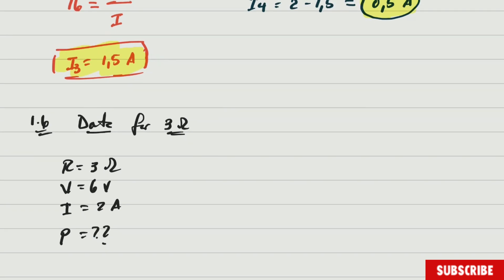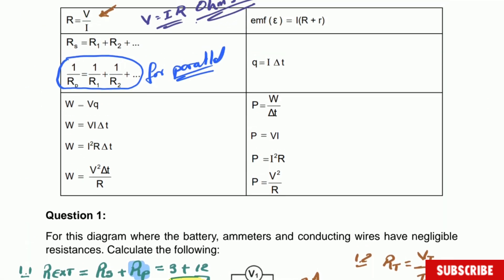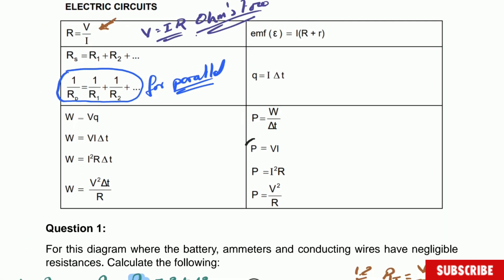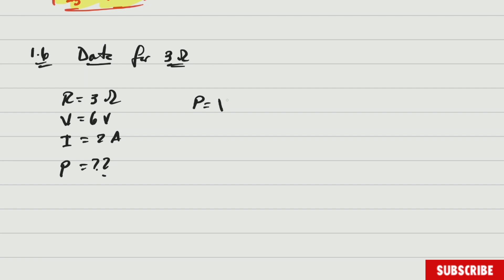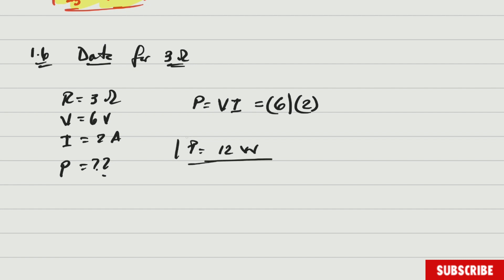Since we don't have energy, we'll use P = V × I. We have everything: V = 6 volts and I = 2 amperes. Therefore power = 12 watts. That is the power for the 3 ohm resistor. End of question 1.6 — quite simple.